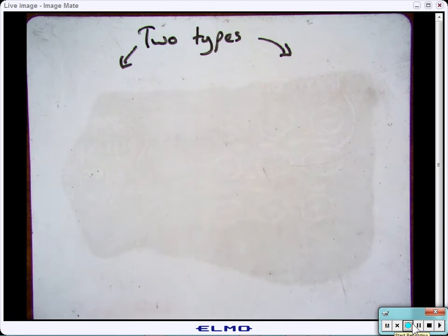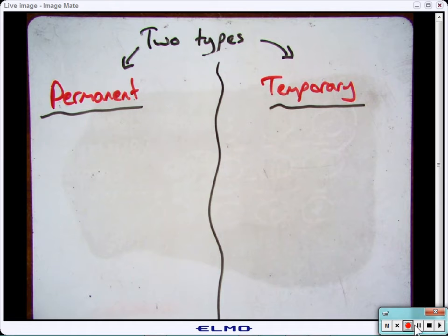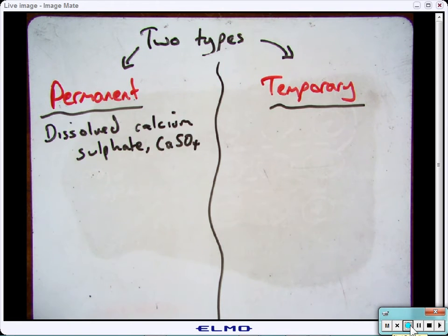There are two different types of hard water: permanent and temporary. Permanent hardness is caused by dissolved calcium sulphate in the water. Temporary hardness is caused by calcium hydrogen carbonate in the water.